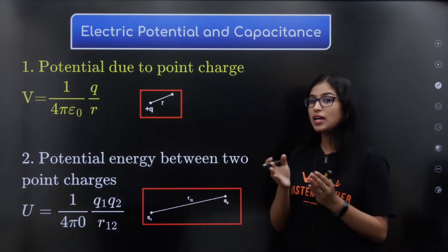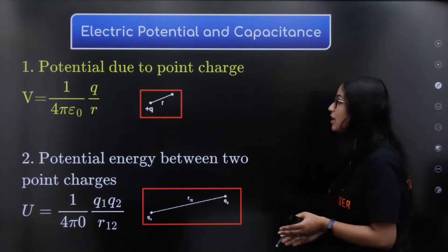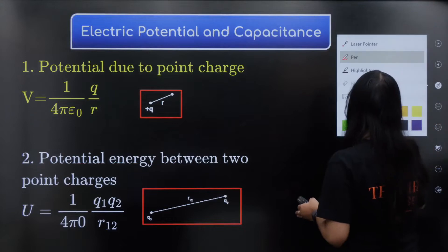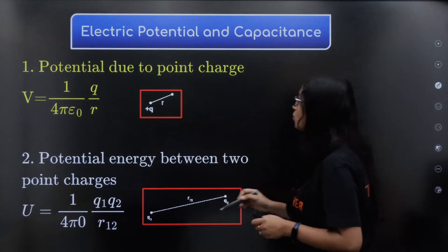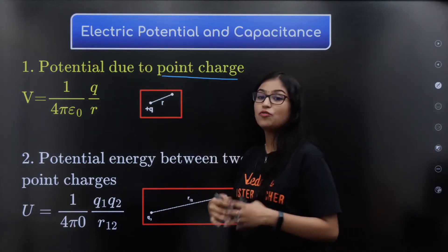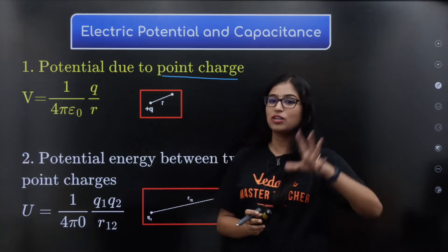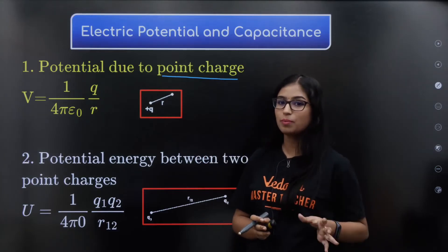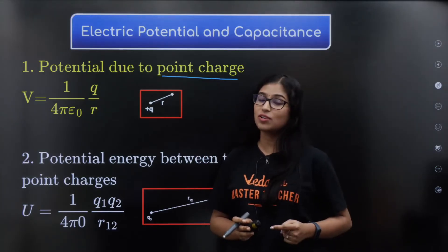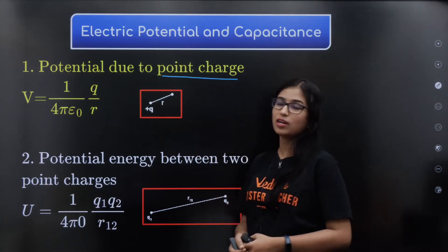So first formula — what are you going to study in this unit? Potential due to point charge. The potential is already done in the lecture videos, so go and watch the lecture videos first. This will be very helpful.